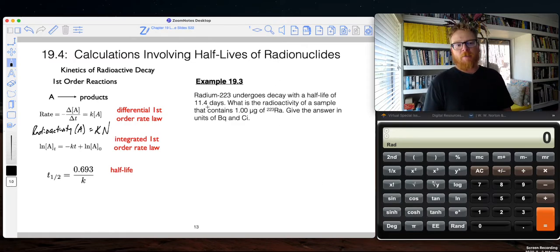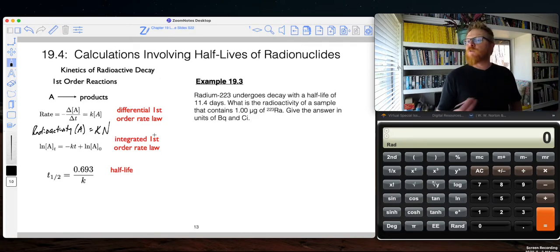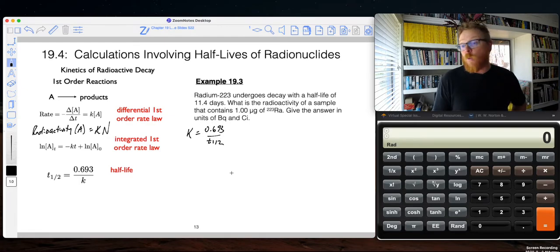Here's an example problem. Radium-223 undergoes decay with a half-life of 11.4 days. What is the radioactivity of a sample that contains one microgram of radium-223? Give the answer in units of Becquerel and Curie. The first thing we need to do is get a rate constant out of this thing. We can use our half-life equation. I'm going to rearrange that to be K equals 0.693 over T 1 half. And because I want these in units of Becquerel and Curie's, I need to convert my days into seconds.